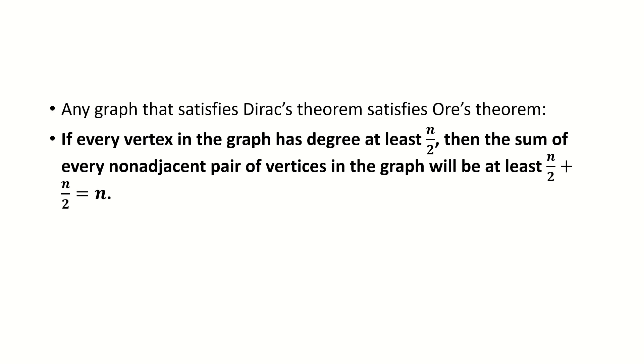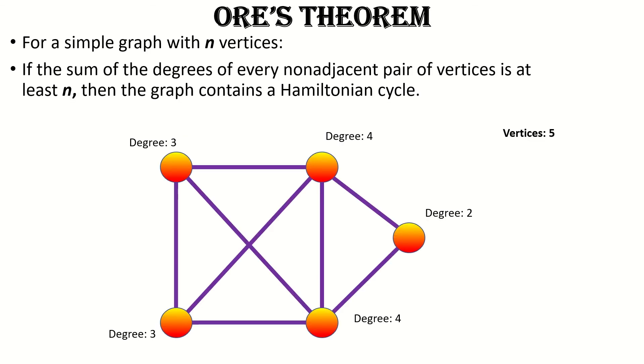However, there are graphs that do not satisfy Dirac's condition, but are Hamiltonian by Ore's theorem, such as the previous graph that we looked at, as there is a vertex with degree 2, which is less than 5 over 2, or 2.5.